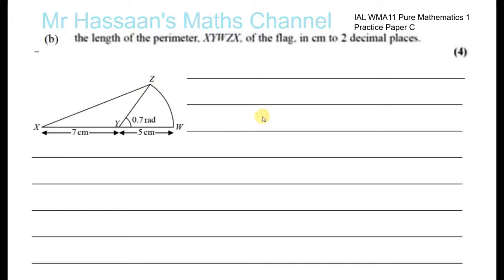For XW, it's all the way from X to W, which equals 12 centimeters. From Z to W is the arc. The length of an arc is given by rθ - the radius times the angle in radians. So ZW is 5 × 0.7, which is 3.5 centimeters.